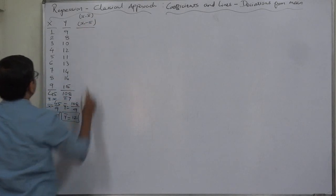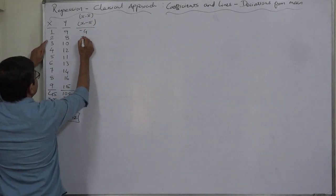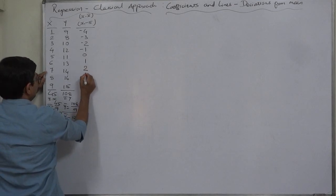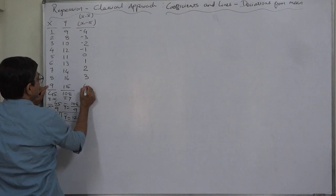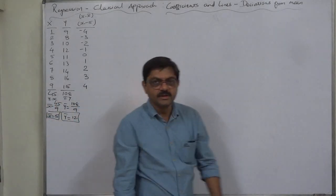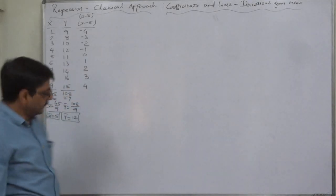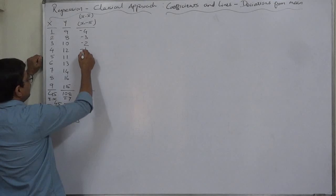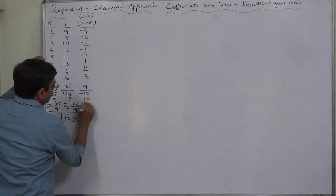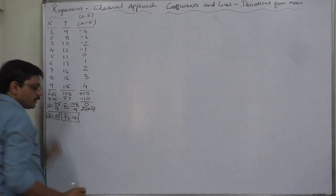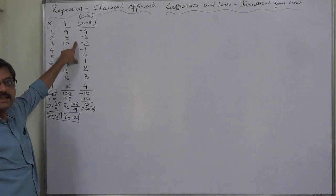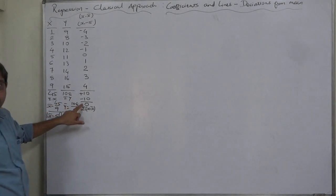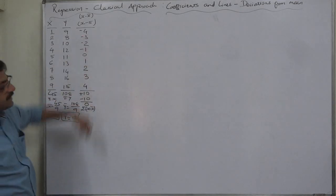Now x minus x̄ equals x minus 5: 1-5 = -4, 2-5 = -3, 3-5 = -2, 4-5 = -1, 5-5 = 0, 6-5 = 1, 7-5 = 2, 8-5 = 3, 9-5 = 4. The unique feature of deviations from the arithmetic mean is that their summation must be zero. Positive sum is 10 and negative sum is -10, so the total is 0, confirming there is no error in this column. Always verify this rather than writing 0 without checking.